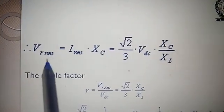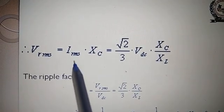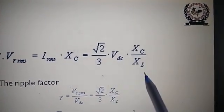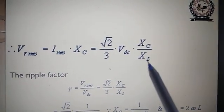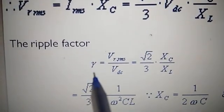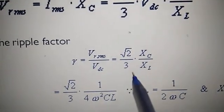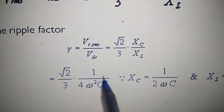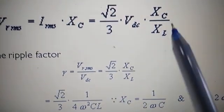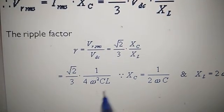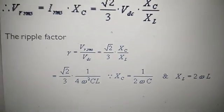The ripple RMS voltage equals the RMS current into the reactance of the capacitor: (√2/3)·VDC·(Xc/XL), where XL is the reactance of the inductance in series. The ripple factor γ = Vrms/VDC = (√2/3)·(Xc/XL). Finally, this simplifies to (√2/3)·(1/(4ω²·C·L)), where Xc = 1/(ωC) and XL = ωL. This completes the LC filter.